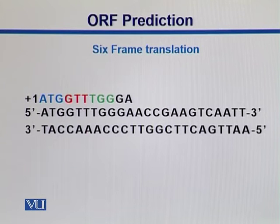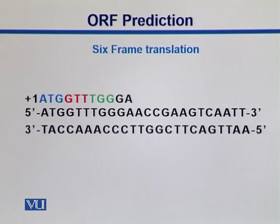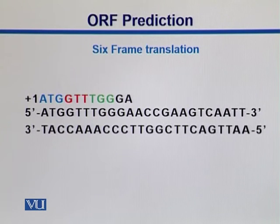So here is how six-frame translation looks. In this picture, we see that the top strand is the forward strand — it starts at five prime and ends at three prime. The complementary strand runs anti-parallel, starting with three prime and ending with five prime. We can start reading from position number one on the first strand, labeled as plus one. In this way, we can start with A and have triplet codons like ATG, GTT, and so on.